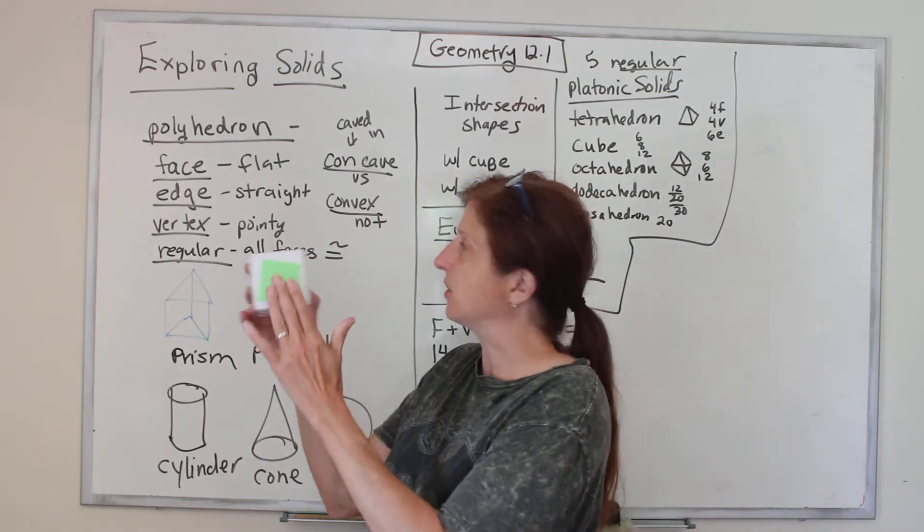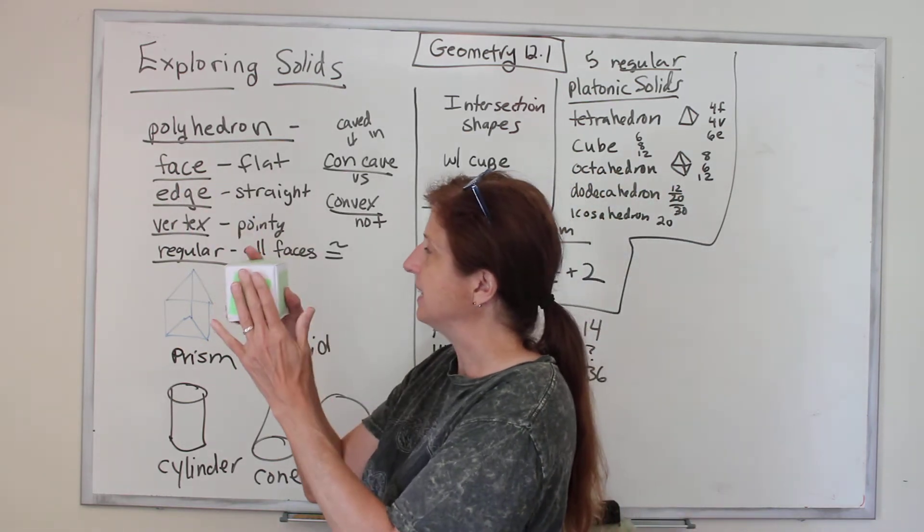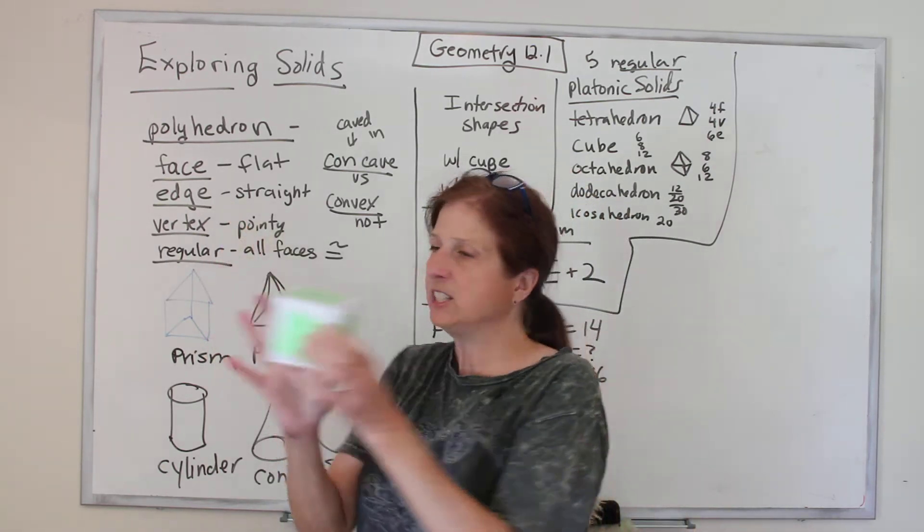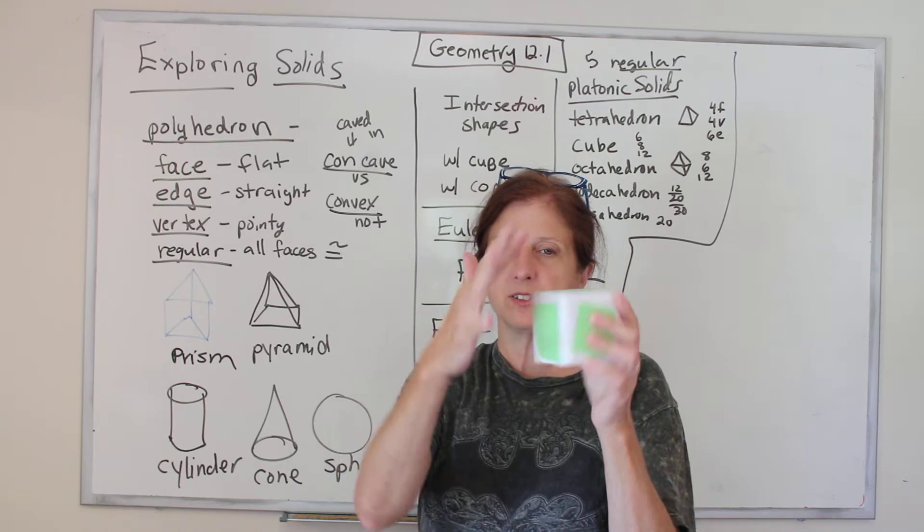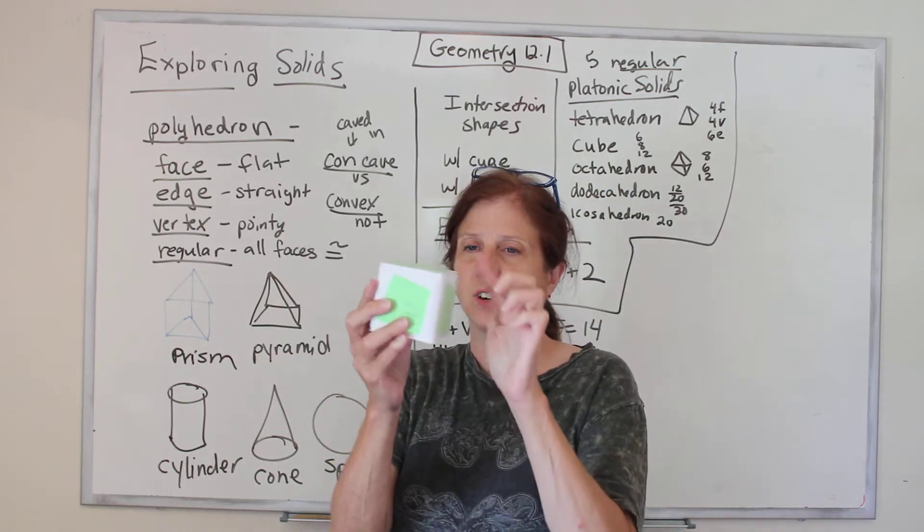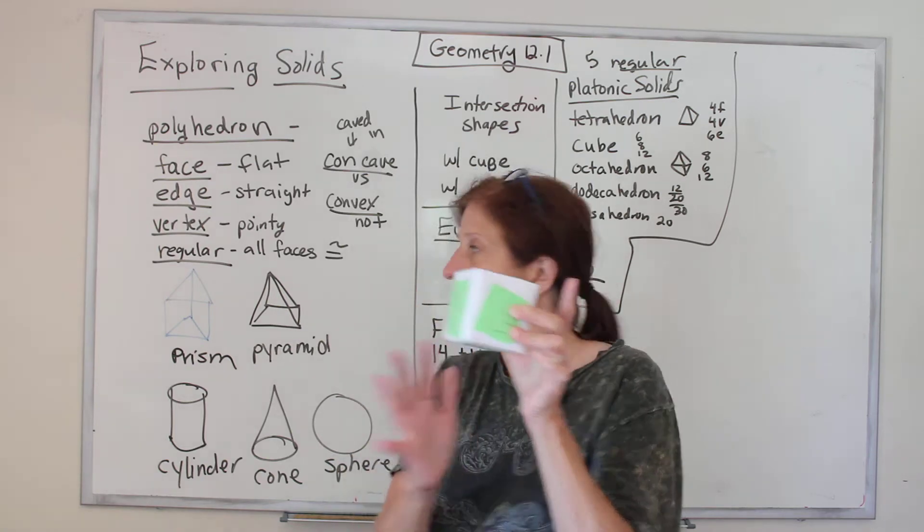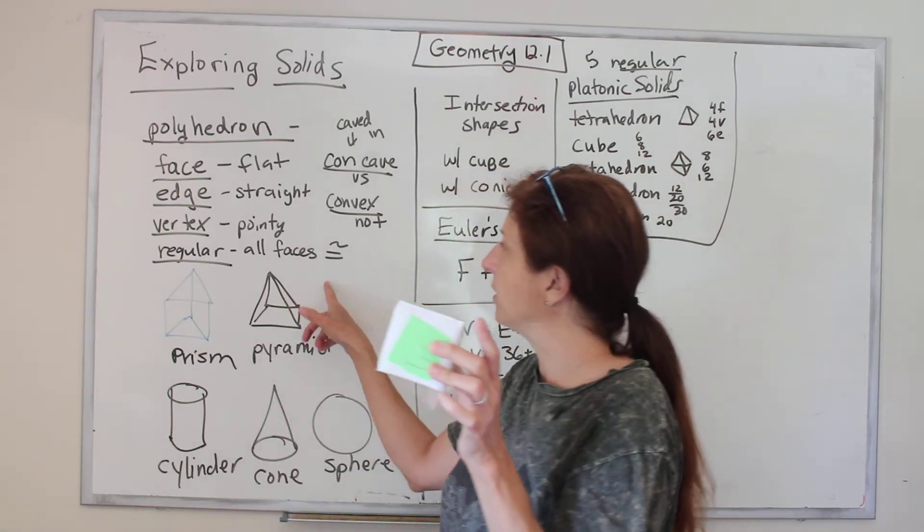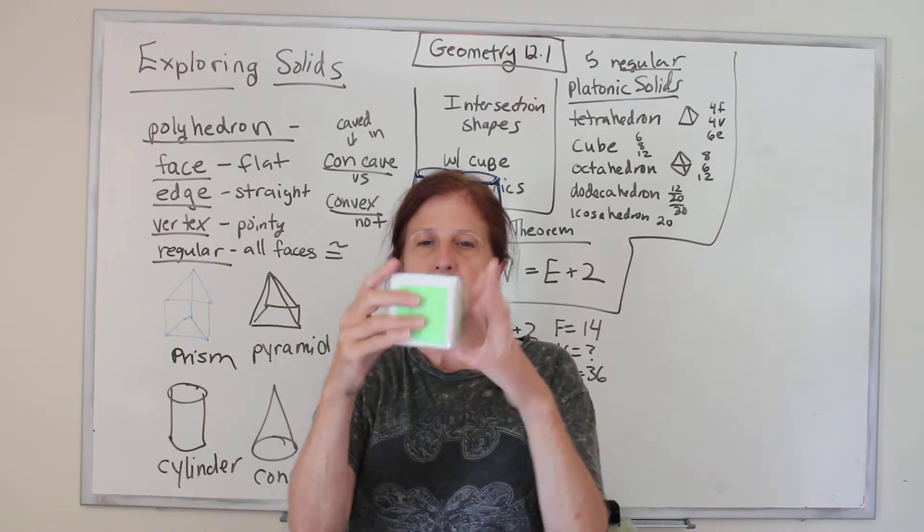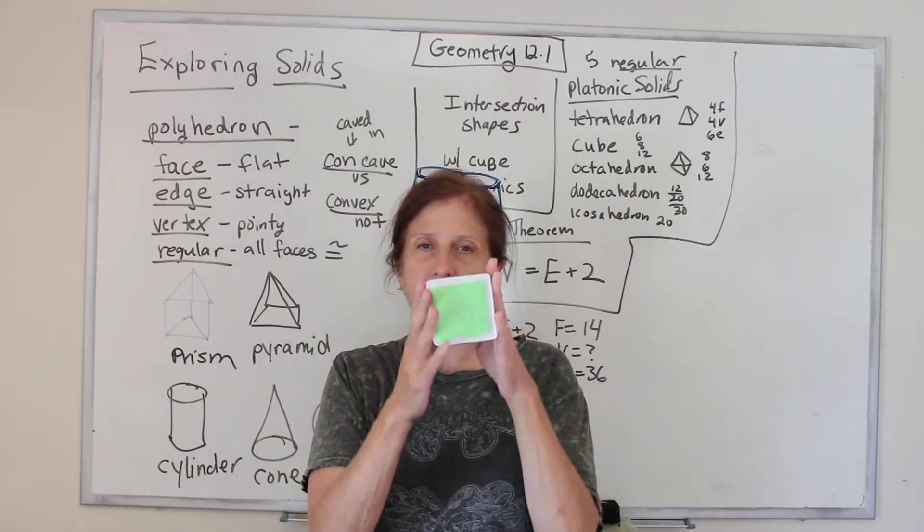So the flat surface is called a face. People call the flat surface of a watch the face of a watch too. The edge is this straight part right here. Those are edges. The vertex are the pointy parts, vertices if it's plural. If it's regular, all the faces are congruent, and this one is regular. Every face is the same size and shape.